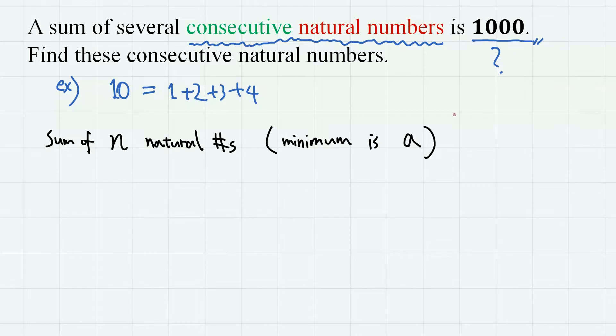So we have to think about the general case here. Consider the sum of n consecutive natural numbers, where a being the least of them. Then these n consecutive numbers are a, a plus 1, a plus 2, and the last one, which is the nth number, is a plus n minus 1.